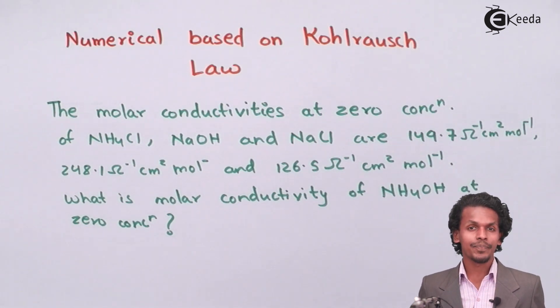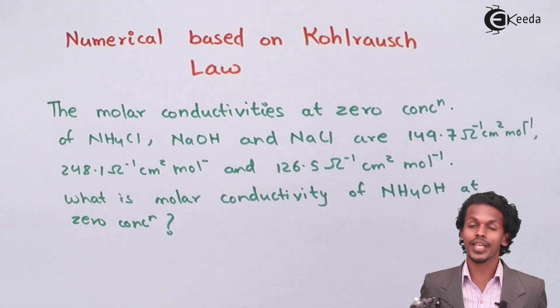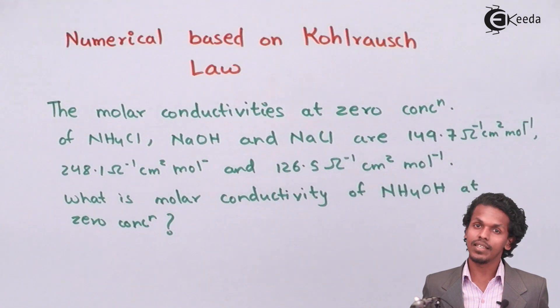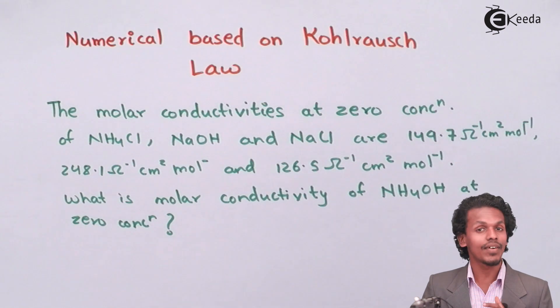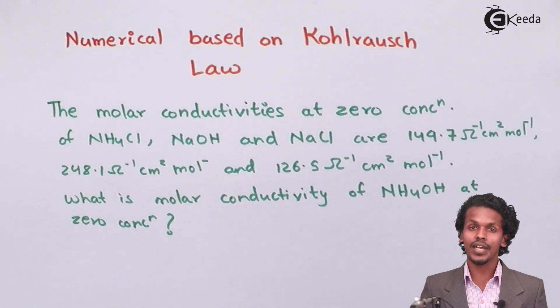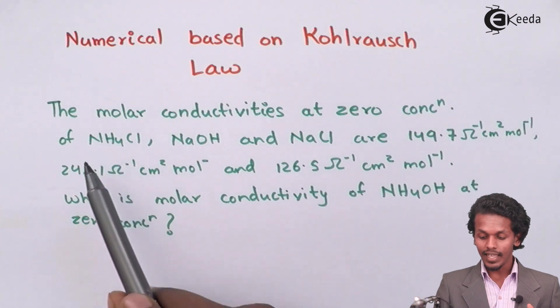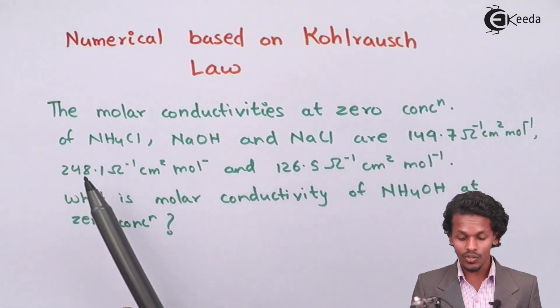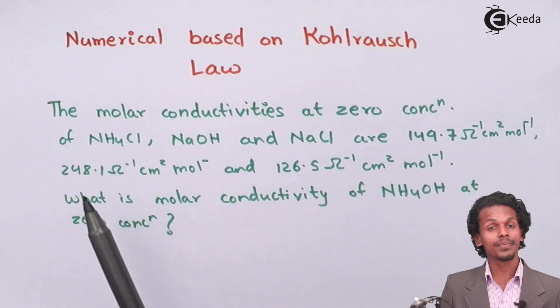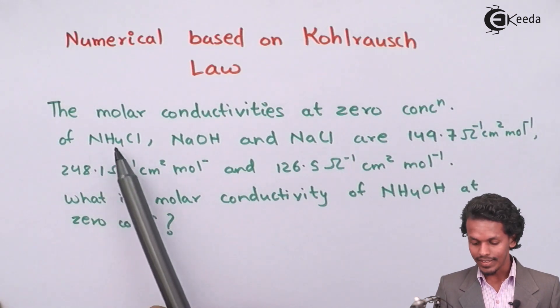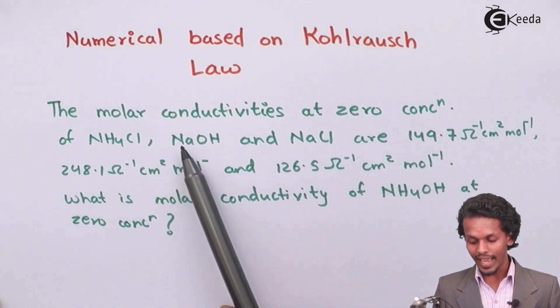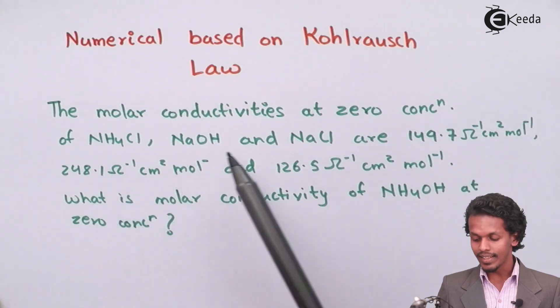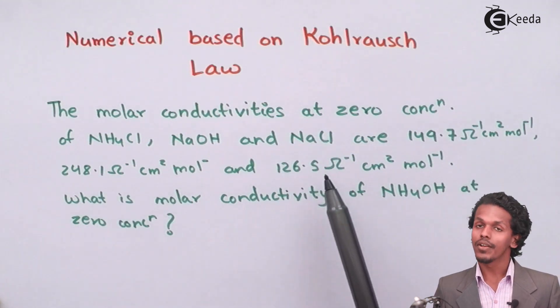So before understanding how can we find the value of the given requirement, the first thing we have to do is extract the given data. Let us see that these values are being arranged in sequence so that we could manage it in a well-directed manner. NH4Cl has a value of 149.7, NaOH has a value of 248.1, and NaCl has a value of 126.5.